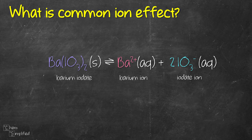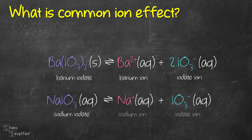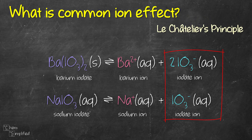So what happens when we add our barium iodate solid into aqueous sodium iodate? Well, sodium iodate contains sodium and iodate ion, so the common ion present here is going to be the iodate ion. Now recalling from our knowledge on Le Chatelier's principle, what do you think will happen to the equilibrium if we increase the concentration of iodate ion, which is on the right-hand side of the equation?